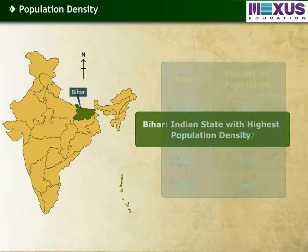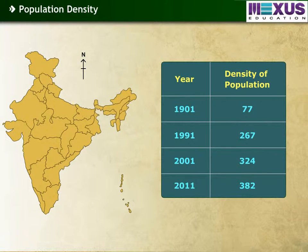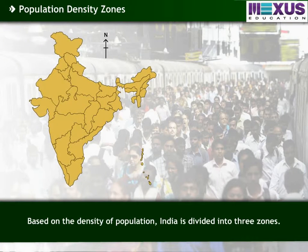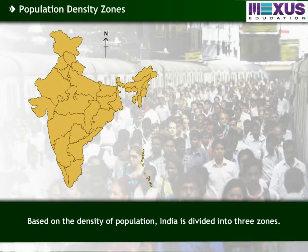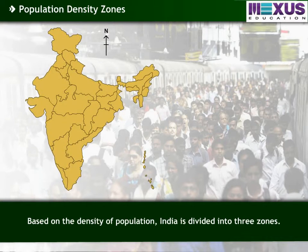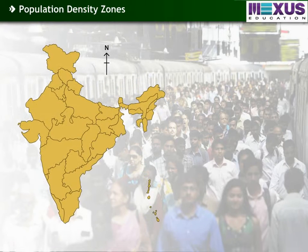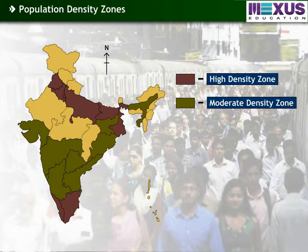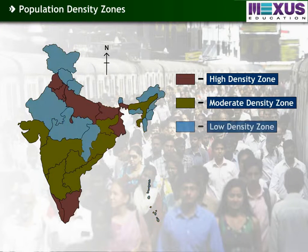The following table lists the increase in density through the decades. Based on the density of population, India is divided into three zones: high density zone, moderate density zone, and low density zone.